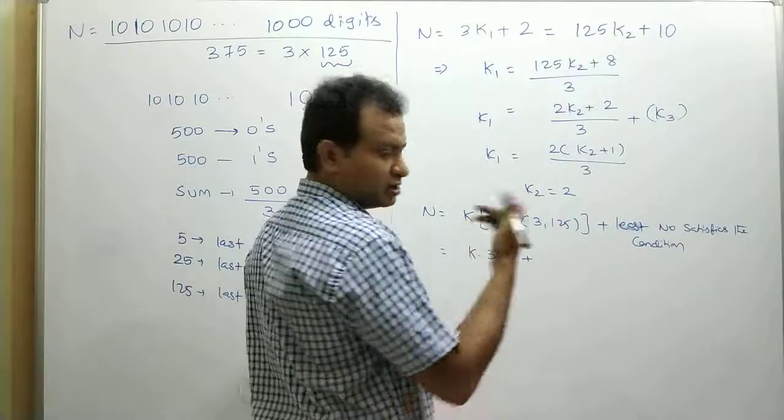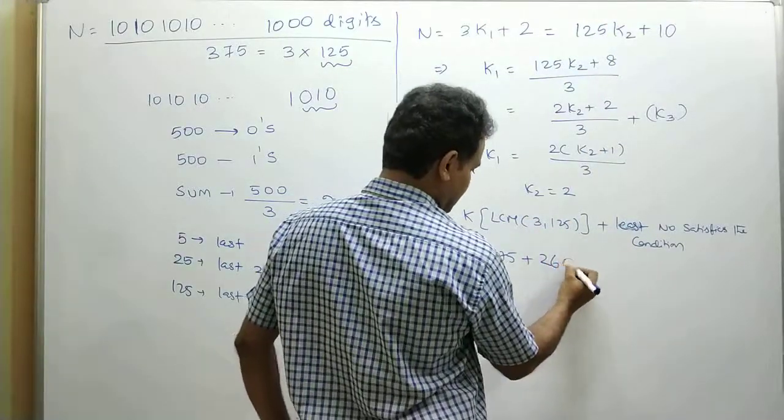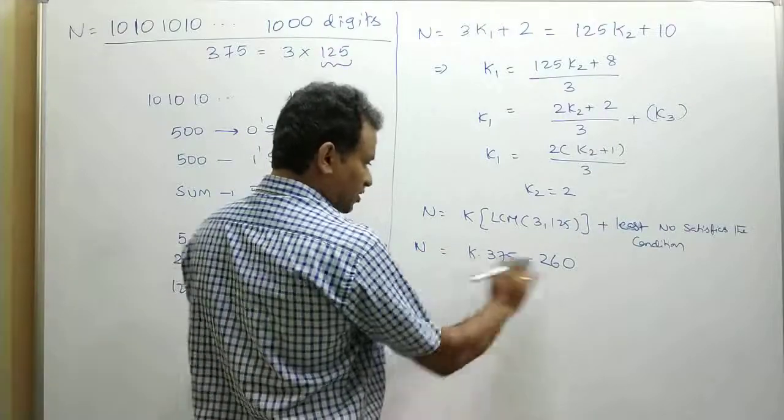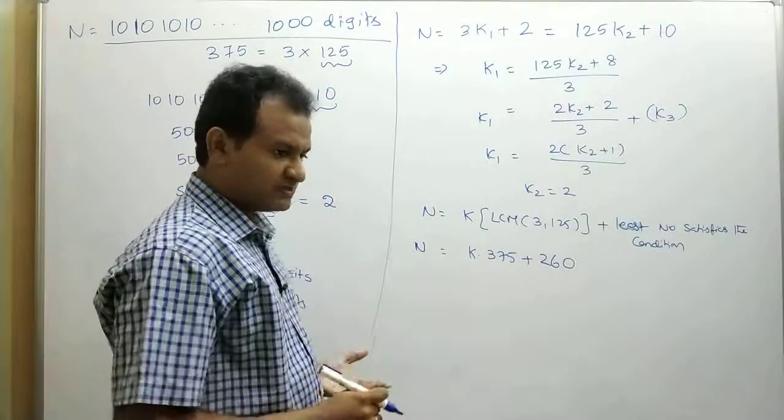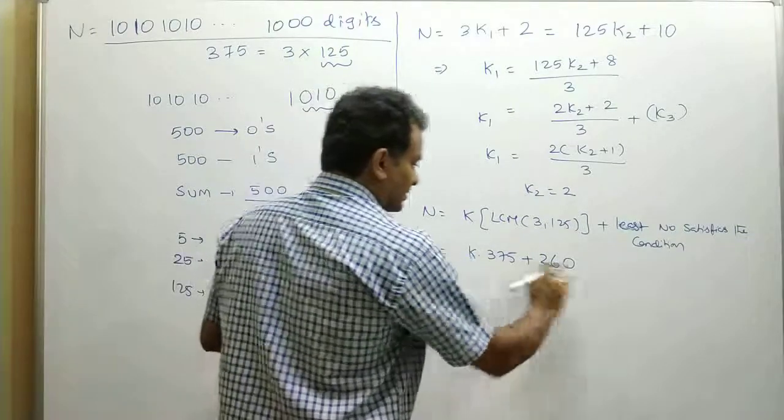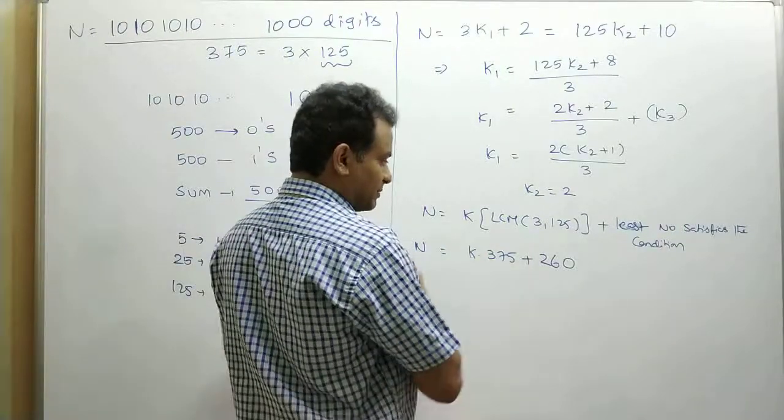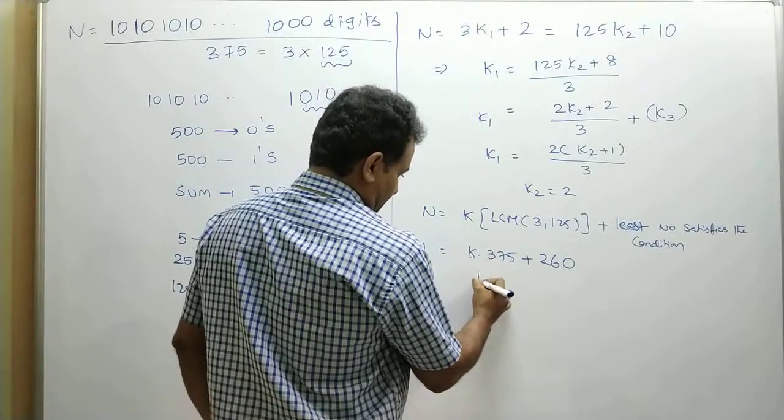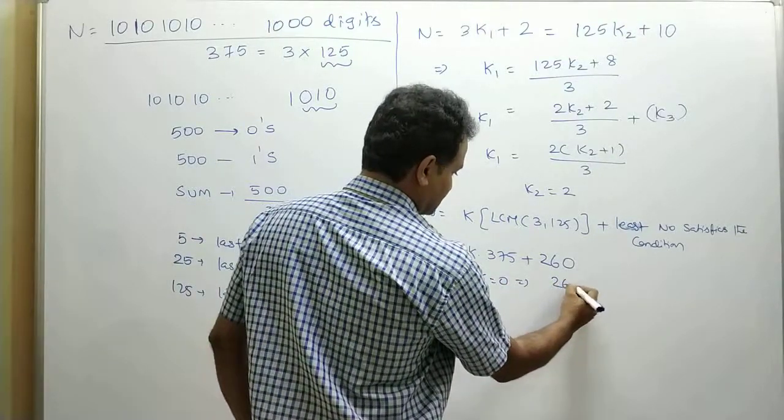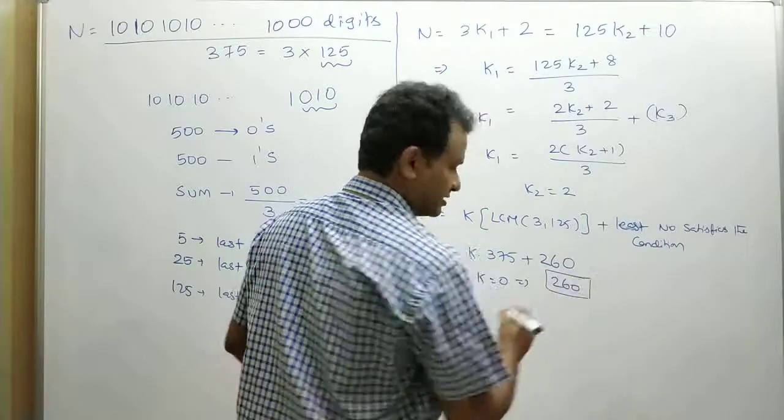So 125 into 2 is 250, 250 plus 10 equals 260. So this is the general format of n. For k equal to 0, you will get the minimum number that satisfies the condition. For example, if we divide this expression by 375, this part will become 0, we are left with 260. Therefore, for k equal to 0, the remainder should be 260, and this should be the final answer.